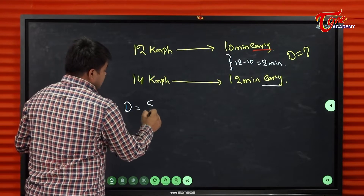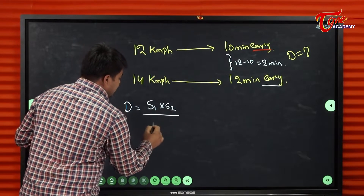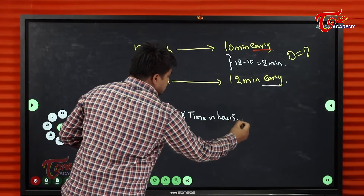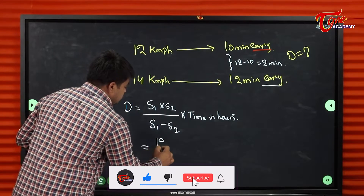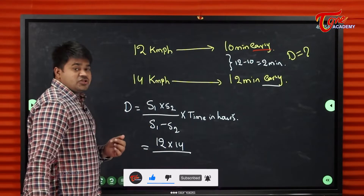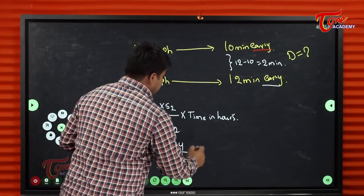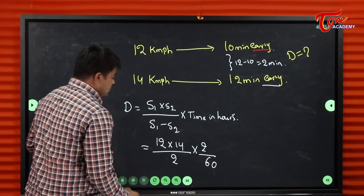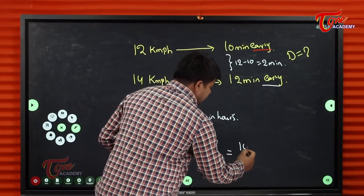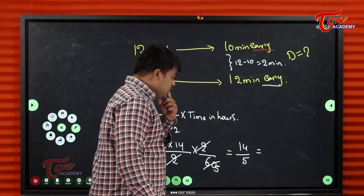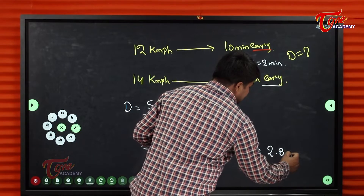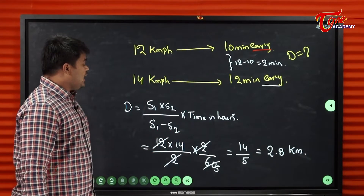Applying the formula: Distance = S1 × S2 / (S1 − S2) × time in hours. So: 12 × 14 / (14 − 12) × 2/60. The 2's cancel, giving 12 × 14 / (2 × 60). Simplifying: 14 by 5, which equals 2.8 kilometers. So the distance is 2.8 kilometers. For early-early, we subtract the times.